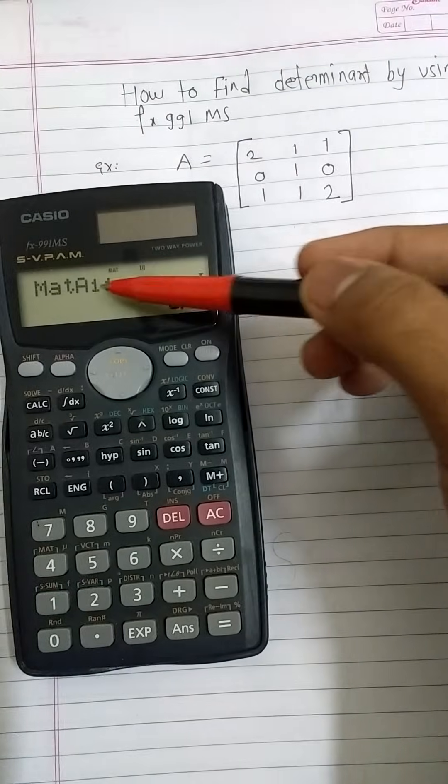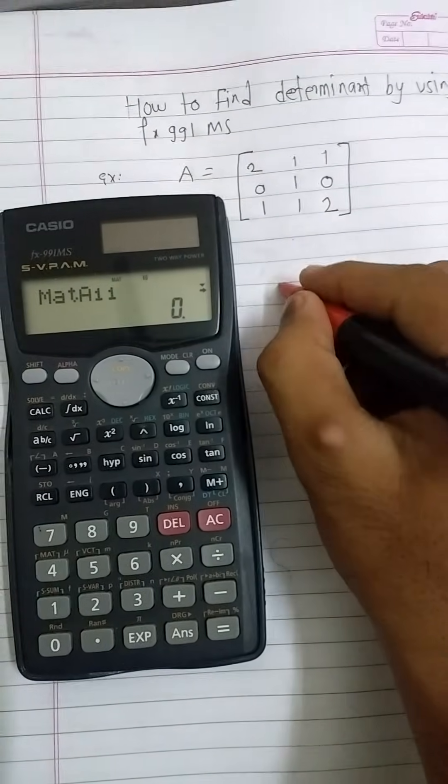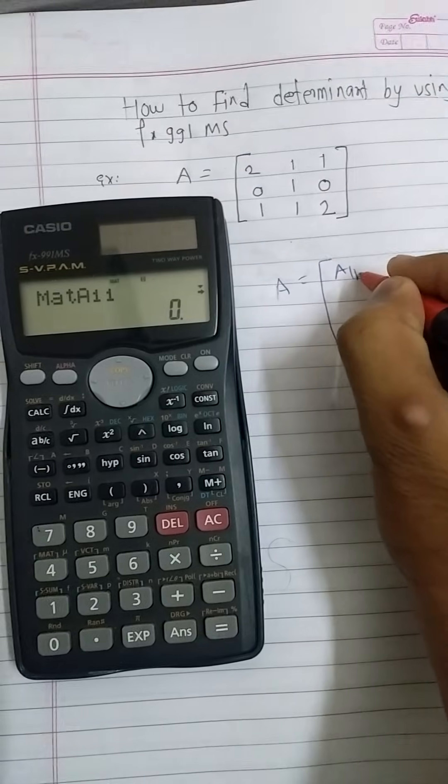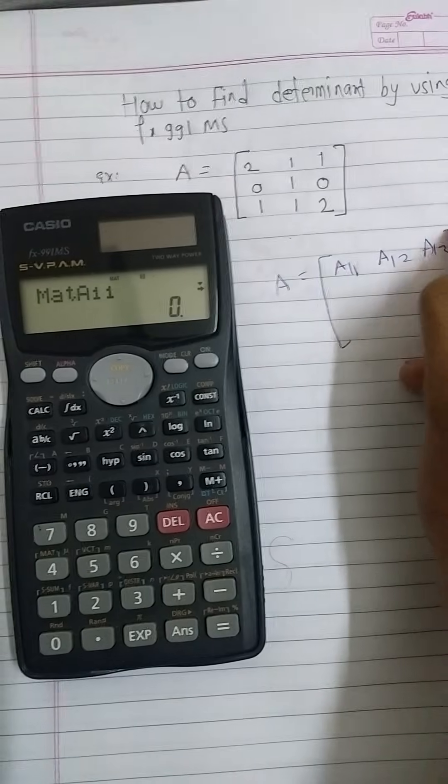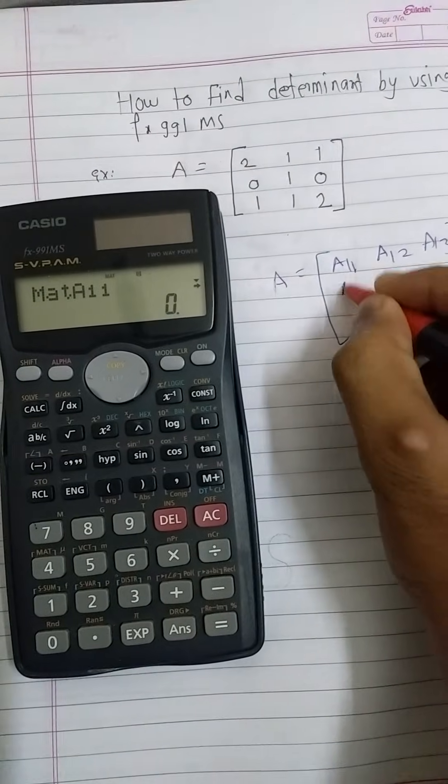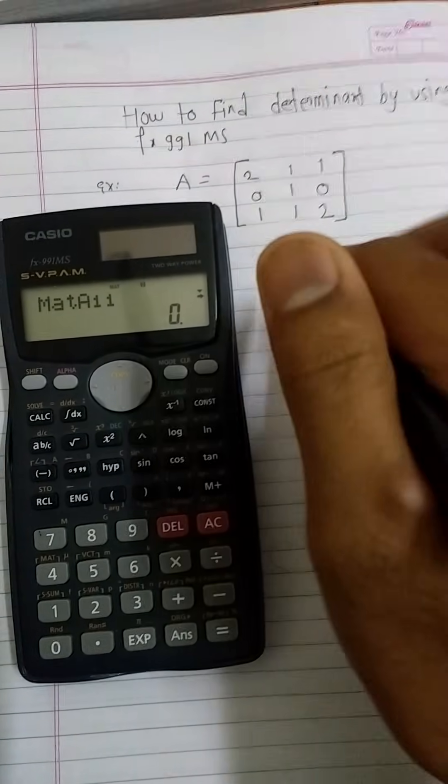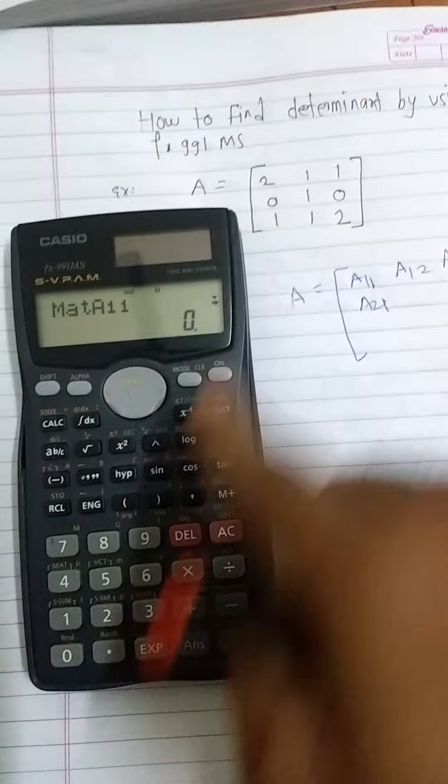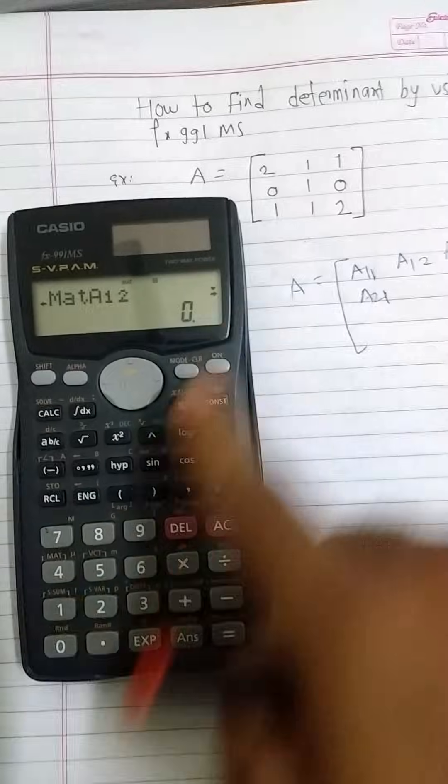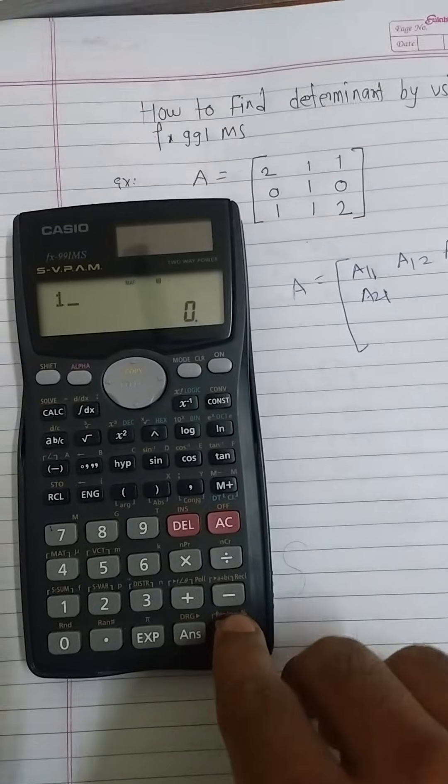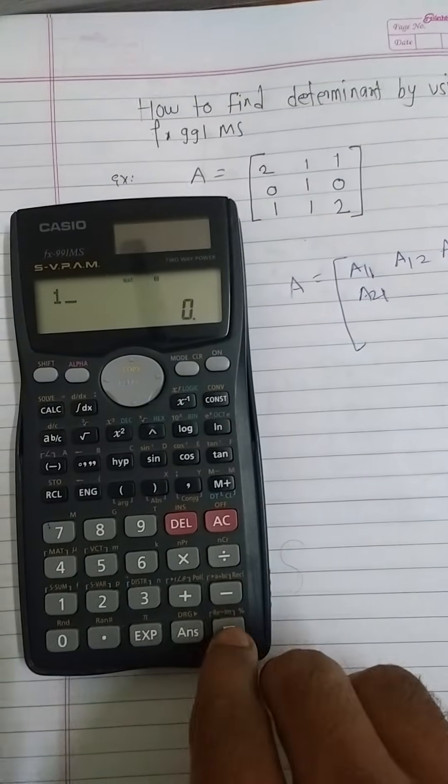Then we will see MAT A 1 1. See here, if A is matrix, then this entry of the first row first column is A11, A12, A13, and so on. Press A21 and so on. Press all entries. A11 is 2, press equal button. A12 is 1, press 1 and equal button. Similarly, put all your entries.